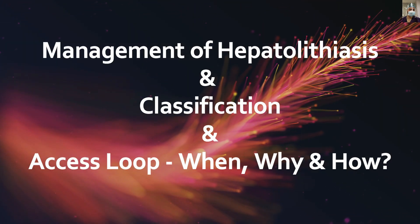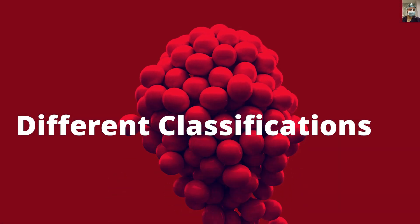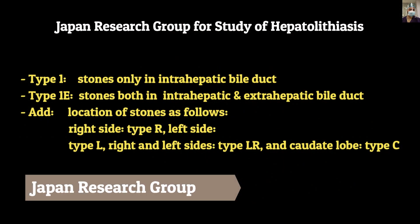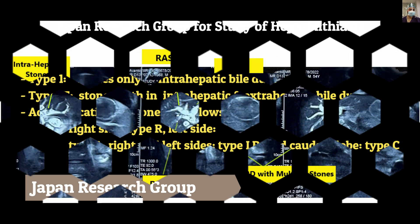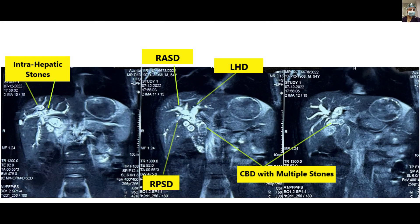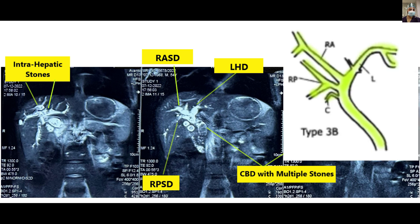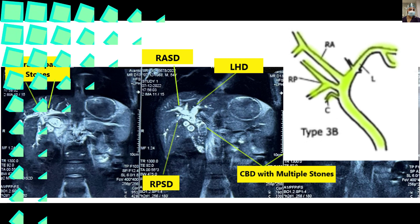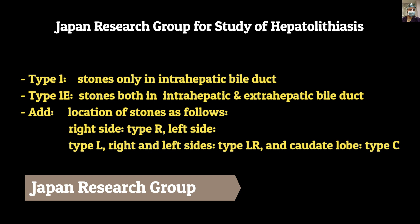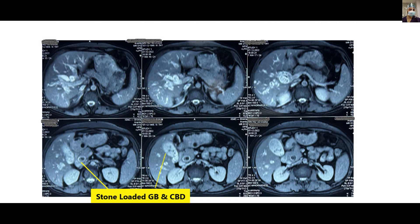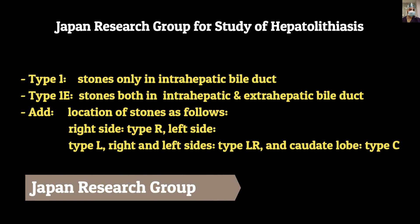Let's look at the different classifications of hepatolithiasis. The first is one of the simplest, given in Blumgart and by the Japan Research Society. Type 1 is stones only in the intra-hepatic bile duct; Type 1e includes stones in both intra- and extra-hepatic bile ducts. Our patient is Type 1e. We can add R or L to indicate right or left side involvement, or LR for bilateral. Our patient's classification is Type 1e LR, with the caudate lobe not involved.